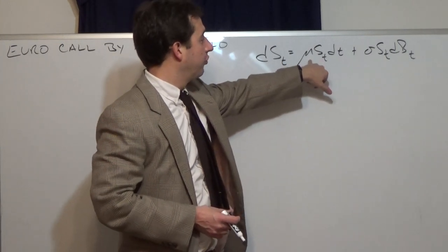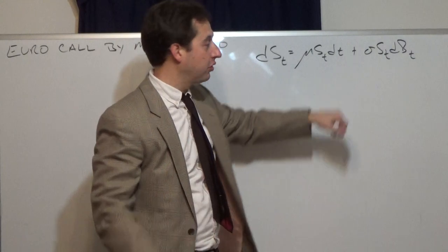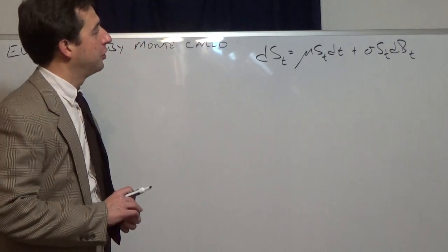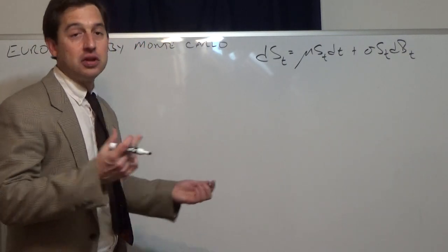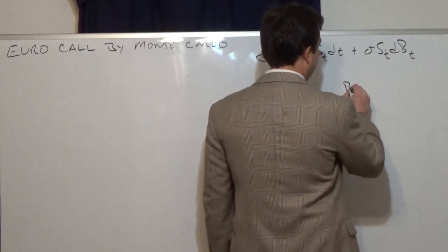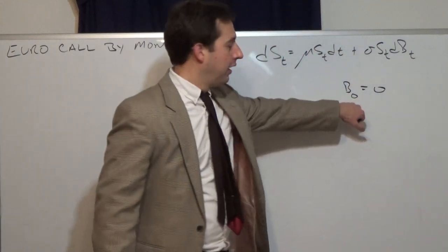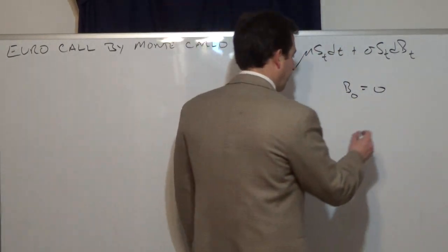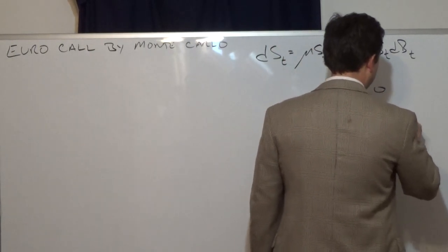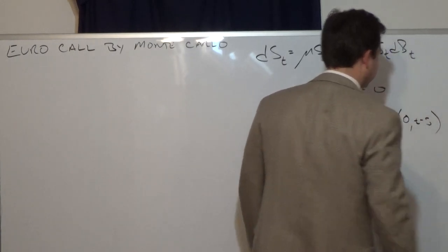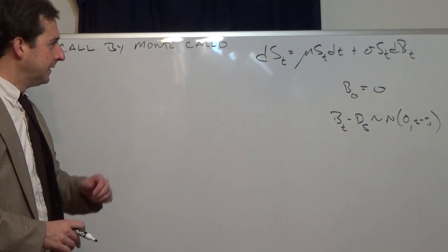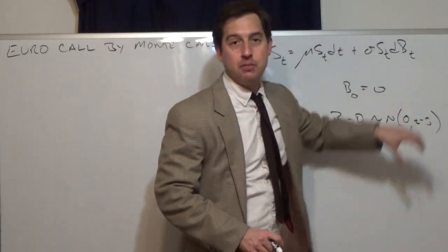This is mu, the drift, times the stock price at time t, for a very small change in time. And then this is our random component — the change in a Brownian motion. The characteristics of Brownian motion we'll use are: at time zero, the Brownian motion equals zero; and the difference B(t) minus B(s) is distributed normally with mean zero and variance t minus s.